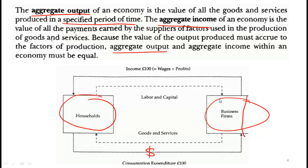Businesses get their labor from households. If a business wants to buy a property to build a factory, they pay some person who owns the land. Households also invest their capital in businesses. So factors of production — labor and capital — are provided by households to firms, and then firms pay wages and profits back to households. Wages are regular wages, and profits come in the form of dividends or interest on bonds.